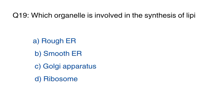Question number 19. Which organ is involved in the synthesis of lipids? The right option is B, smooth ER.